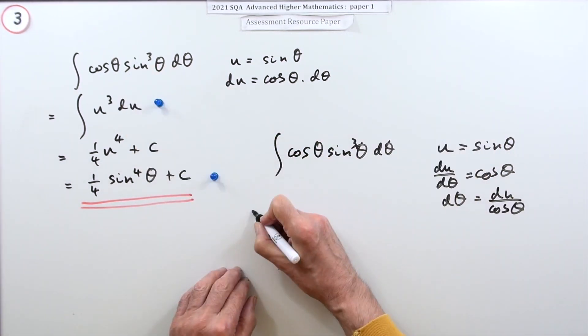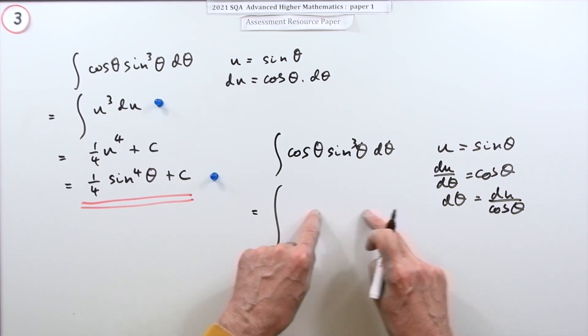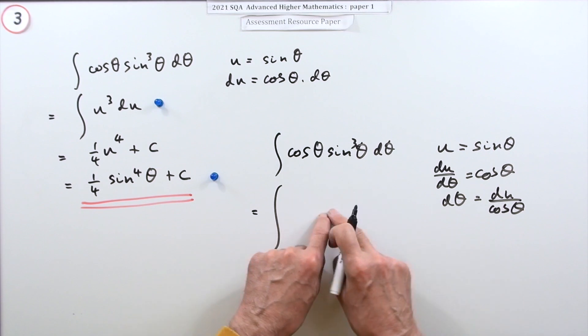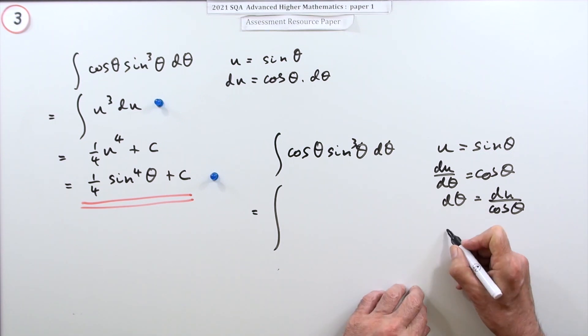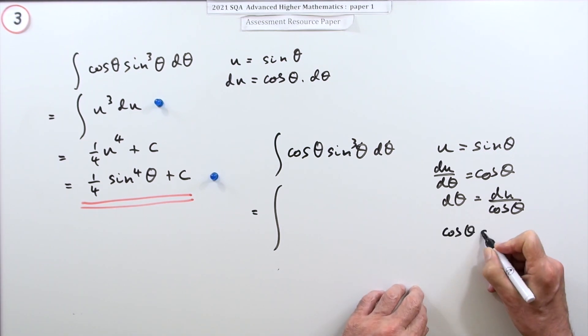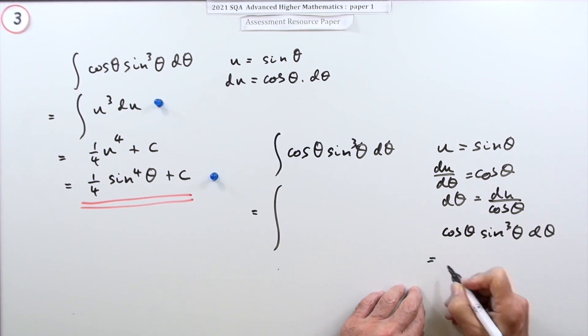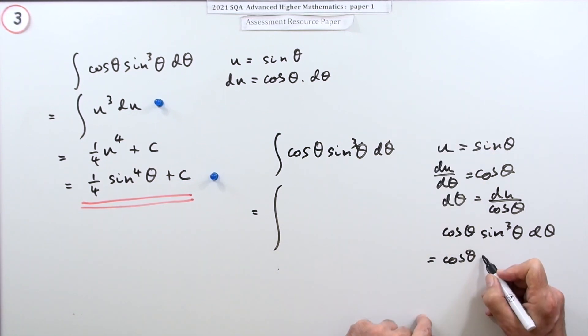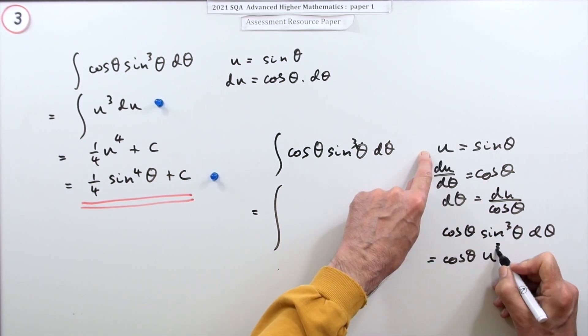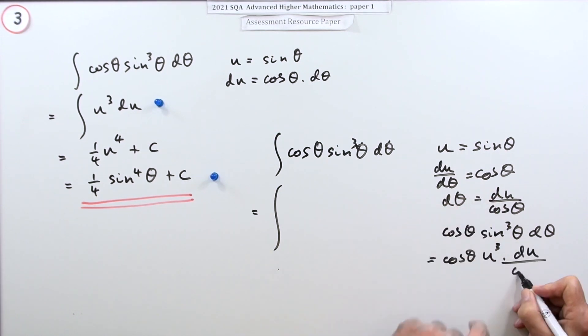Instead of having that metamorphosis going on in here—because it's kind of upsetting to witness—you can do it over here. Obviously it takes more writing, but it keeps you straight. So this is the expression that you want to transform. So you just transform it: I've got a sine theta which can be replaced by a u, so that's u cubed. I've got a d theta which can be replaced by a du over cos theta, then I can see they cancel out.